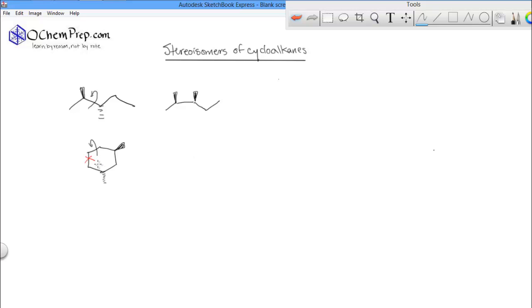And breaking a bond takes a lot more energy than rotating a bond. So there is no way to take this structure with one coming out and one going back and easily change it into this structure with both of the methyl groups coming out at you.